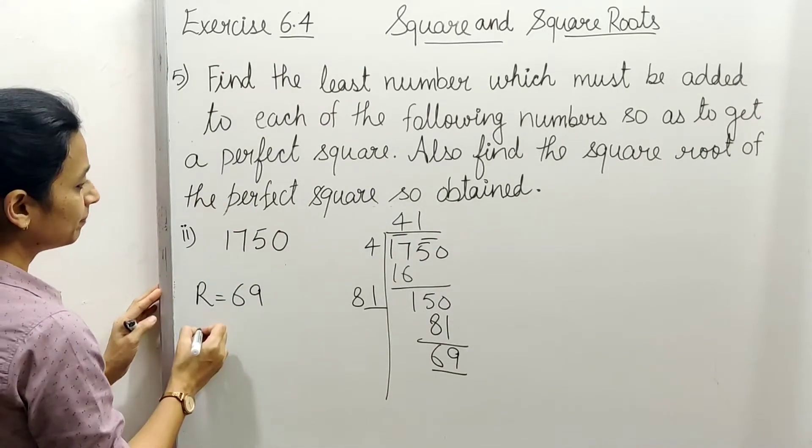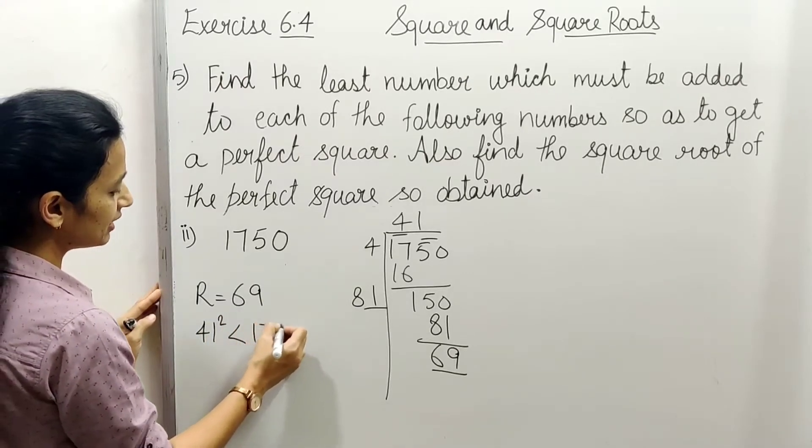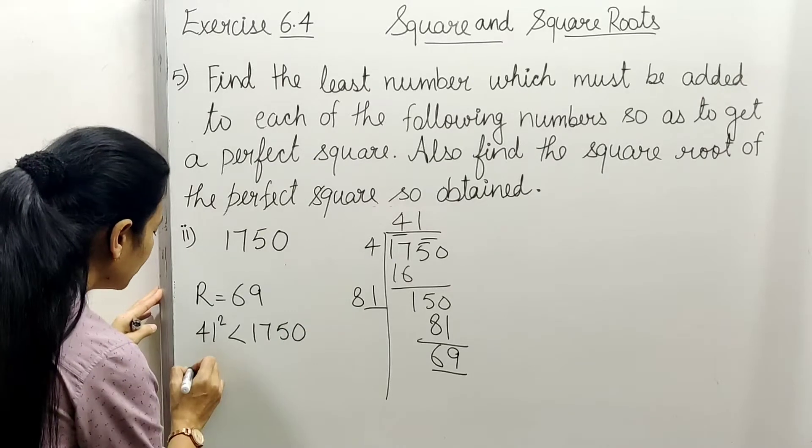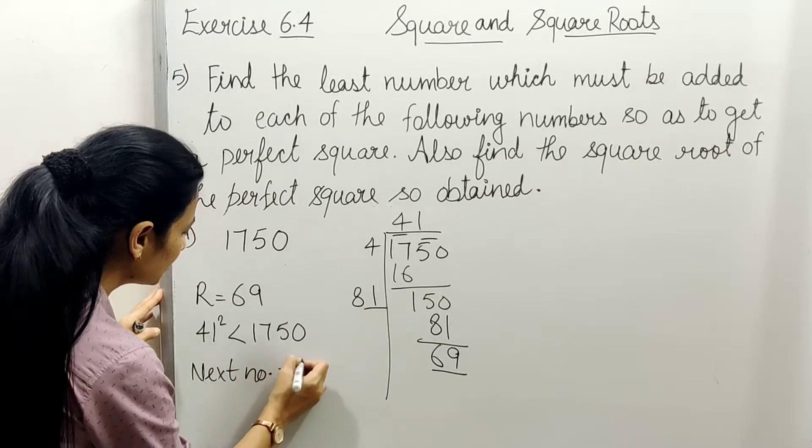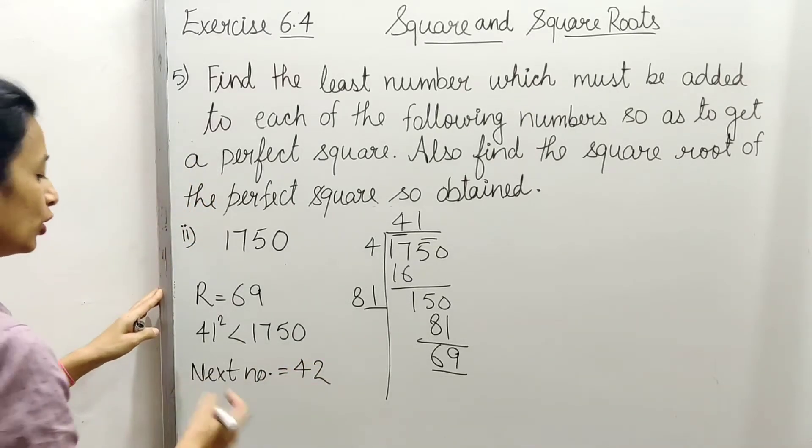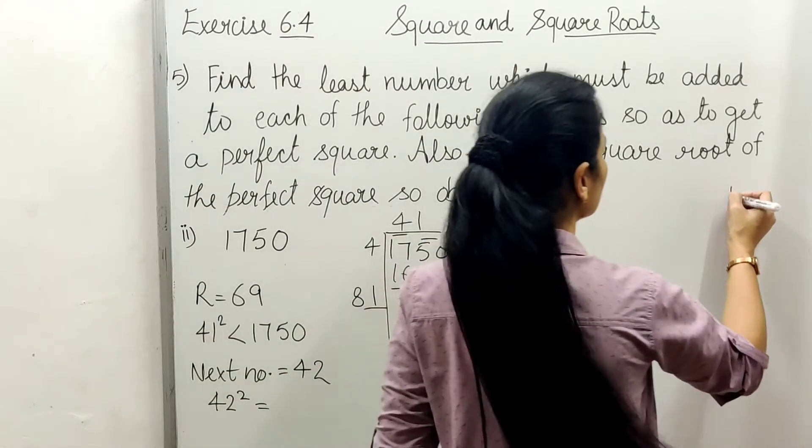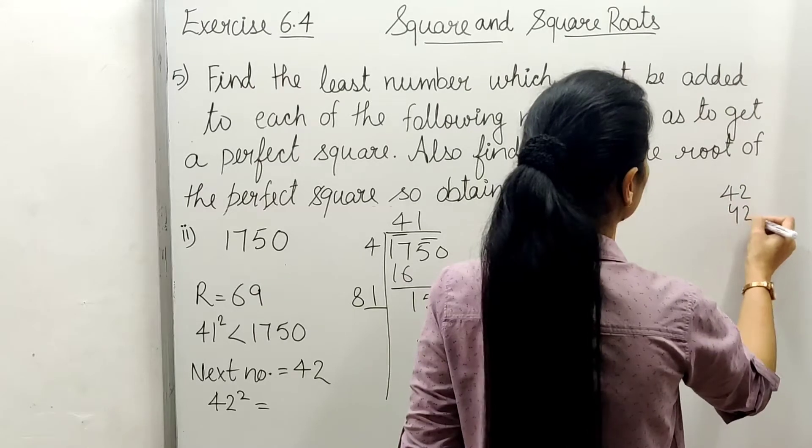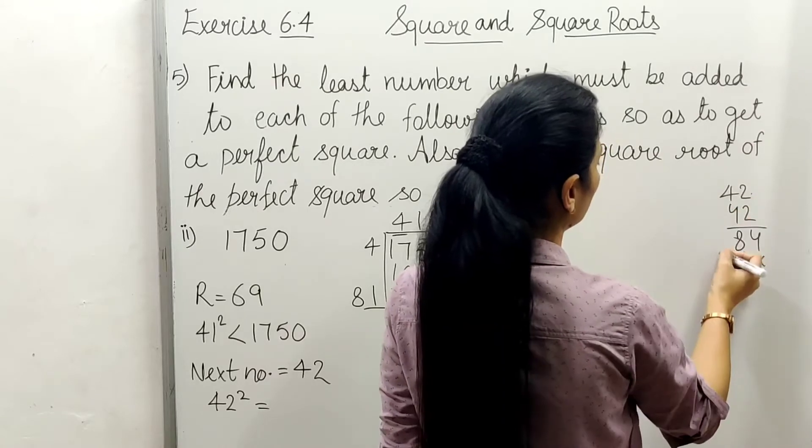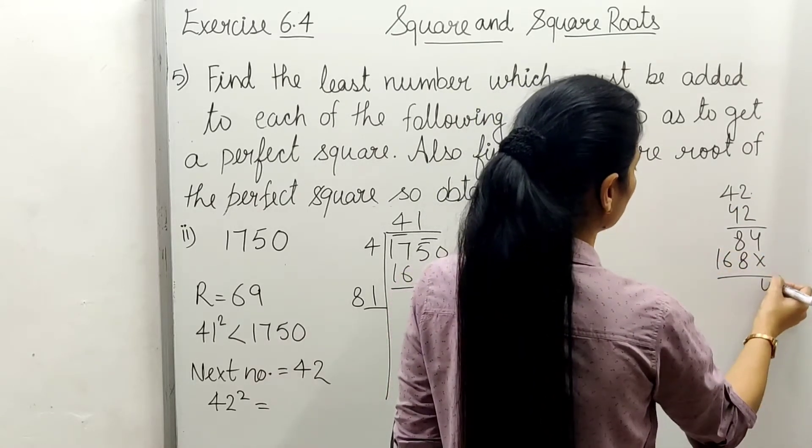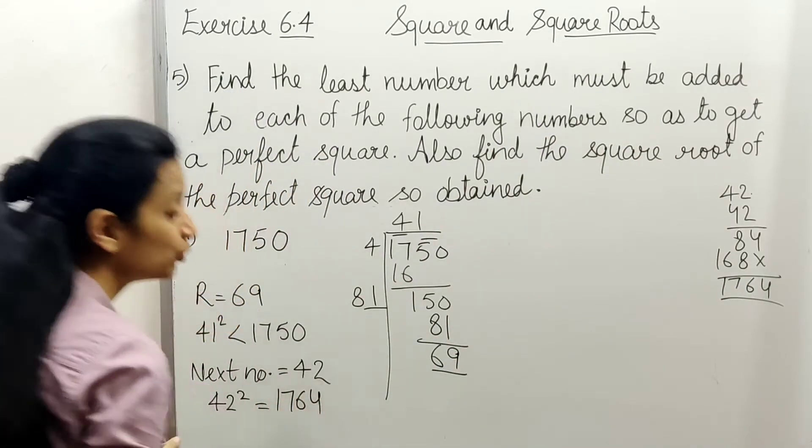This shows that square of 41 is less than 1750. Therefore, next number will be 42. And square of 42 equals, let's calculate: 42×42, 2×4, 4×8, 4×8, gives 16, 4, 6, 7, 1. So we got 1764.